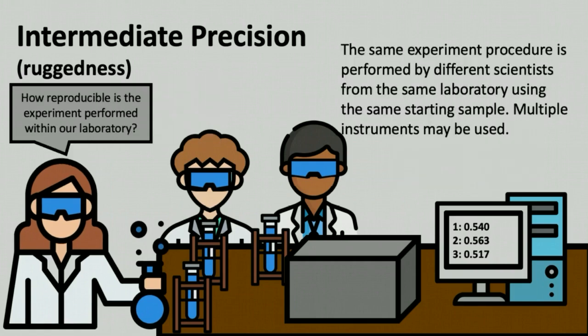To summarize, intermediate precision, or ruggedness, measures the reproducibility of measurements across a laboratory. The same experimental procedure is performed by different scientists on different days, with the final measurement potentially made by different instruments. However, all of these variables are contained within a single laboratory.